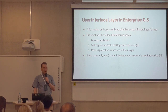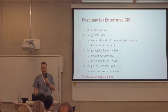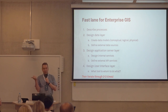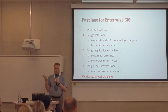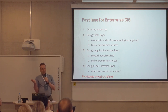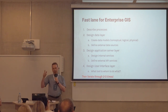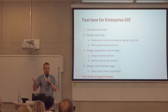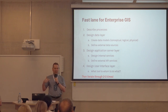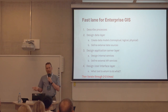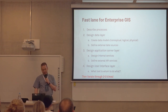If you have only one kind of user interface, you don't have enterprise GIS. The fast lane for enterprise GIS: disrupt and document processes, design the data layer, design the application server layer, think about designing the user interface. Then iterate two or three times to better understand what is needed. Because if you don't have a dataset, you can't really make a user interface — you may need to go back to the data layer and create new things.